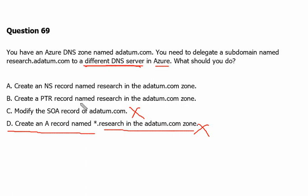Option B is to create a PTR record named research in the adatum.com zone. In the domain name system, a PTR record stands for pointer record. It is a type of resource record used primarily for reverse DNS lookup. While most DNS records map domain names to IP addresses — forward DNS lookup — PTR records do the opposite: they map IP addresses to domain names. That is not the purpose of this question, where we want to point a subdomain to a different DNS server.